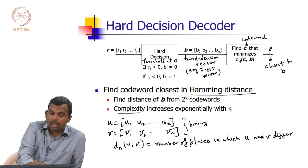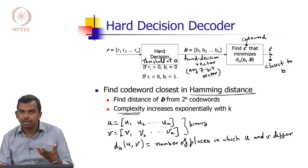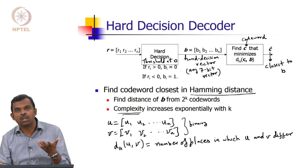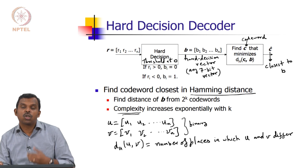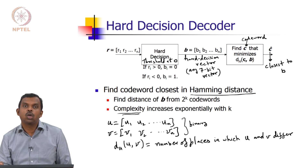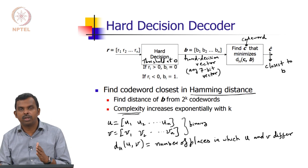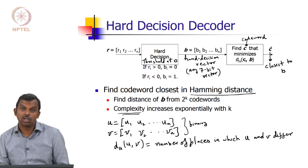Quickly, a comment on complexity. Here we have k equals 4, so 2 to the power 4 is just 16 — you can do this exhaustively. But if k were even 100, 2 to the power 100 is a very large number, and you cannot do these calculations easily. Finding the distance one codeword at a time is not going to work if you have a large number of codewords. In real communication systems k could be 1000 or 10000. So while this decoder is easy to describe theoretically, it is not going to be very useful in practice and you will have to improve upon it in terms of complexity.